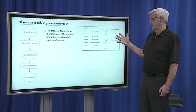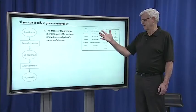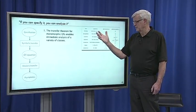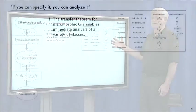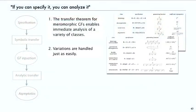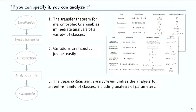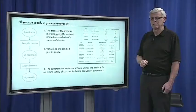So, as promised, I think in this lecture you've seen that our transfer theorem for meromorphic generating functions gives immediate analysis of a large variety of classes. We can just as easily handle variations. And then we have the idea of a schema which unifies the analysis for a whole family of classes including analysis of parameters.